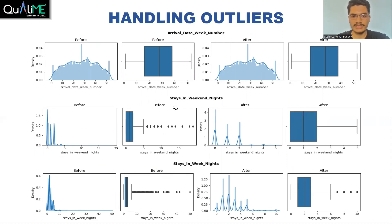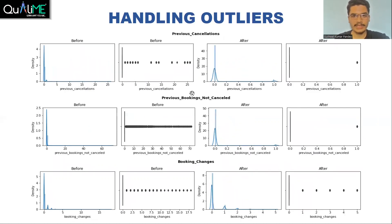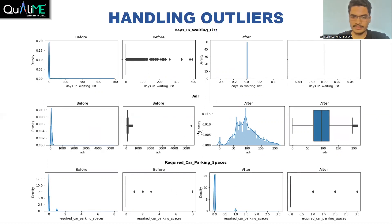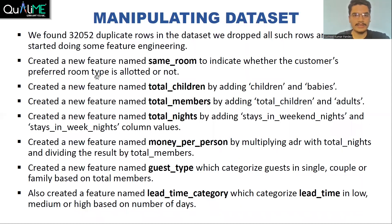The features compared before and after outlier treatment include: arrival date week number, stays in weekend nights, stays in weeknights, adults, children, babies, previous cancellations, previous bookings not cancelled, booking changes, days in waiting list, and ADR. The distribution of average daily rate was very pointed earlier with an outlier lying far outside. After treating the outlier, the distribution became close to a normal distribution and the outlier is no longer present. This is also shown for required car parking spaces.